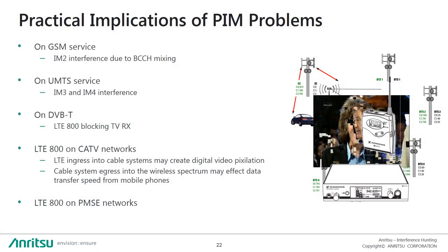Some common practical PIM problems seen in the real world include, on UMTS or 3G cellular service, problems with third and fourth order intermodulation interference. We also see LTE 800 blocking digital TV or DVB-T received signals. Another example is LTE 800 on cable TV networks, where we see issues with both LTE ingress into cable systems creating video pixelation, and cable system egress into the cellular spectrum affecting data transfer speeds.